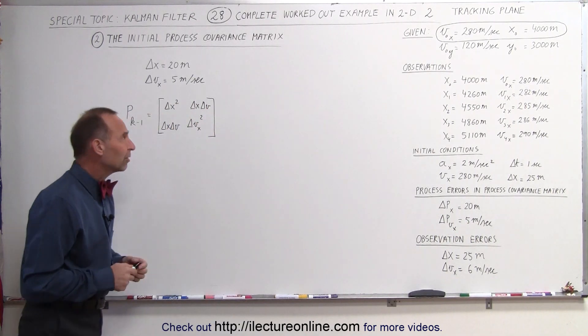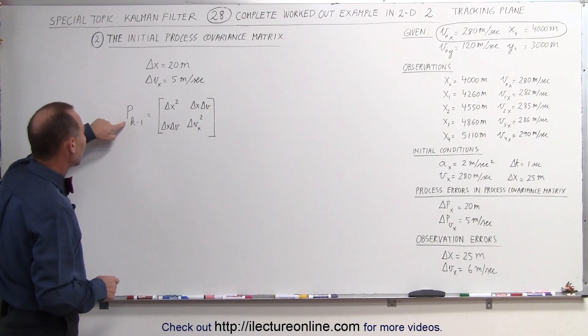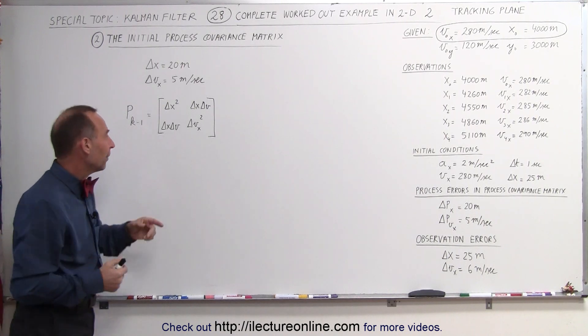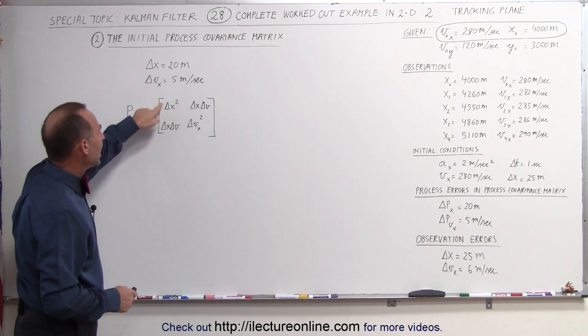So what does the process covariance matrix look like? Well, the process covariance matrix from the previous step, which in this case is going to be the initial step, is going to be equal to a matrix like this.